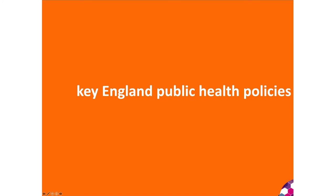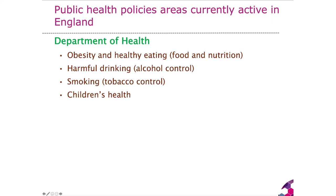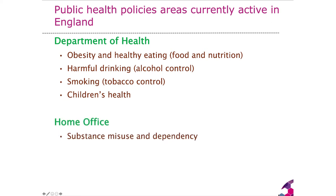Some of the key England public health policies worth considering: the Department of Health focuses on obesity and healthy eating, harmful drinking, smoking and children's health. The Home Office is very interested in substance misuse and dependency, so there is often a partnership between the Department of Health and the Home Office to work on substance misuse, because many substances — cannabis, cocaine, heroin, amphetamines — are illegal, making it not just a public health issue but also a crime and safety issue.